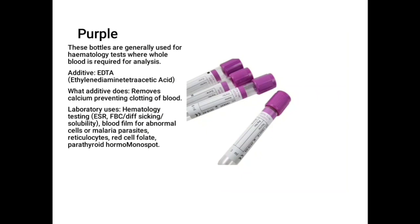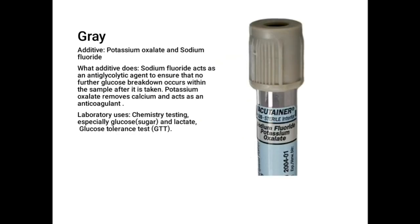The purple top container has an additive known as EDTA, which is an anticoagulant that prevents blood from clotting. It is mostly used in hematological testing such as ESR, FBC or platelet count, sickling test, and solubility. It can also be used to make a blood film — a thin film and a thick film. If you want to identify the malaria parasite, it can be used for reticulocyte count and more.